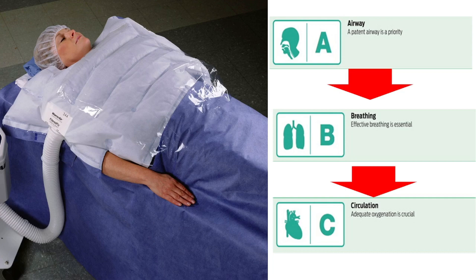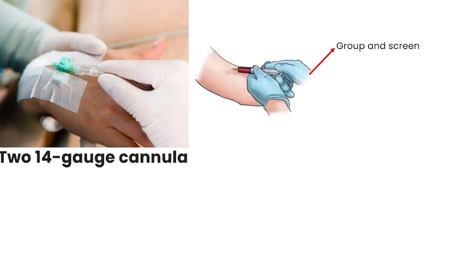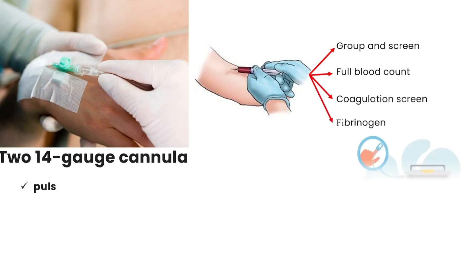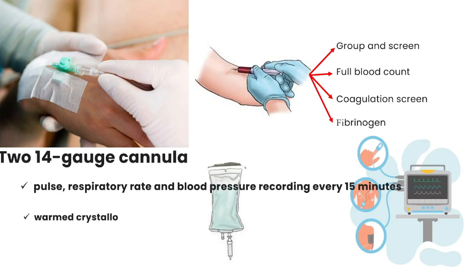Obtain intravenous access using two 14-gauge cannulae and perform urgent venipuncture for group and screen. Full blood count and coagulation screen, including fibrinogen, should be done. Record pulse, respiratory rate, and blood pressure every 15 minutes, and commence warmed crystalloid infusion.